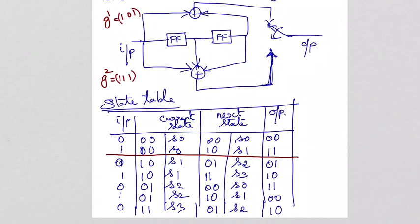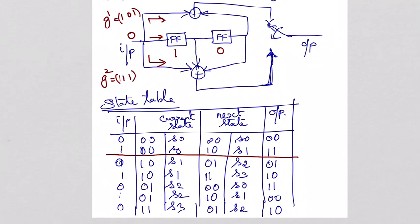Now, if the current state is 10 and you apply 0 as input, this 0 will go into the adder and will be moved to the first flip-flop. The 1 which is available in the flip-flop will come out. So you have 0 plus 1 plus 0 giving 1 in the top adder, and 0 plus 0 giving 0 in the bottom adder. The output is 01. So current state 10 with input 0 gives output 01.